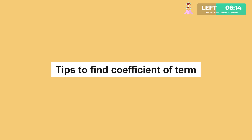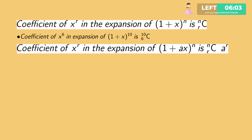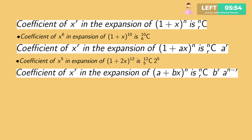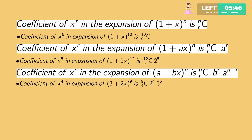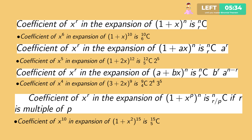Tips to find the coefficient of a required term: the coefficient of x to the power r in (1 plus x) to the power n is nCr. In (1 plus ax) to the power n it is nCr times a to the power r. In (a plus bx) to the power n it is nCr times b to the power r times a to the power (n minus r). In (1 plus x to the power p) to the power n it is nCr with r being a multiple of p, giving r by p.